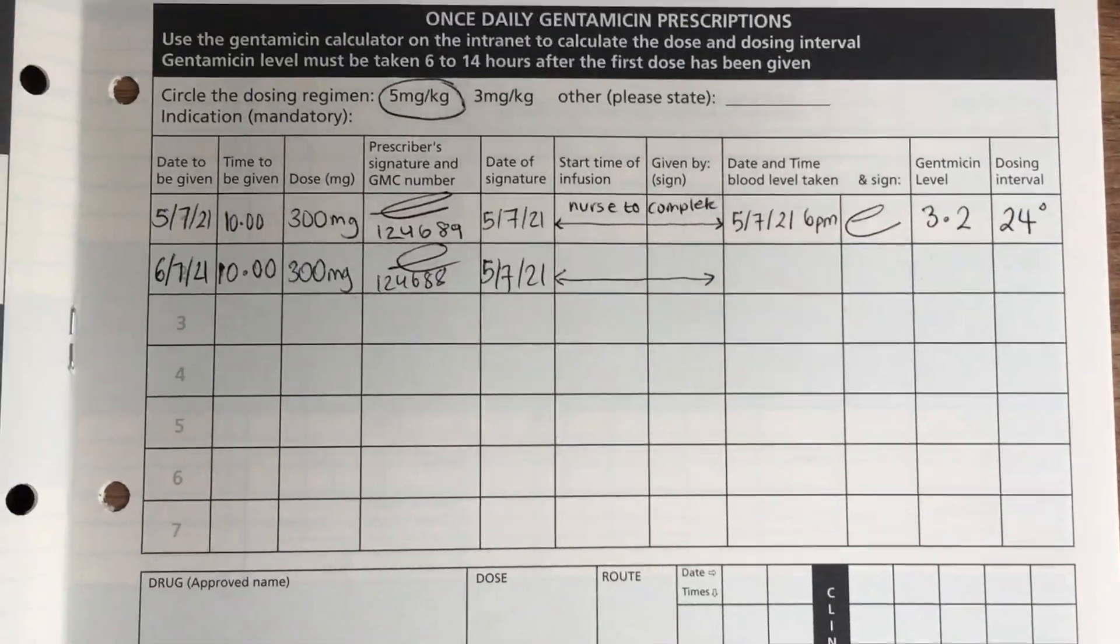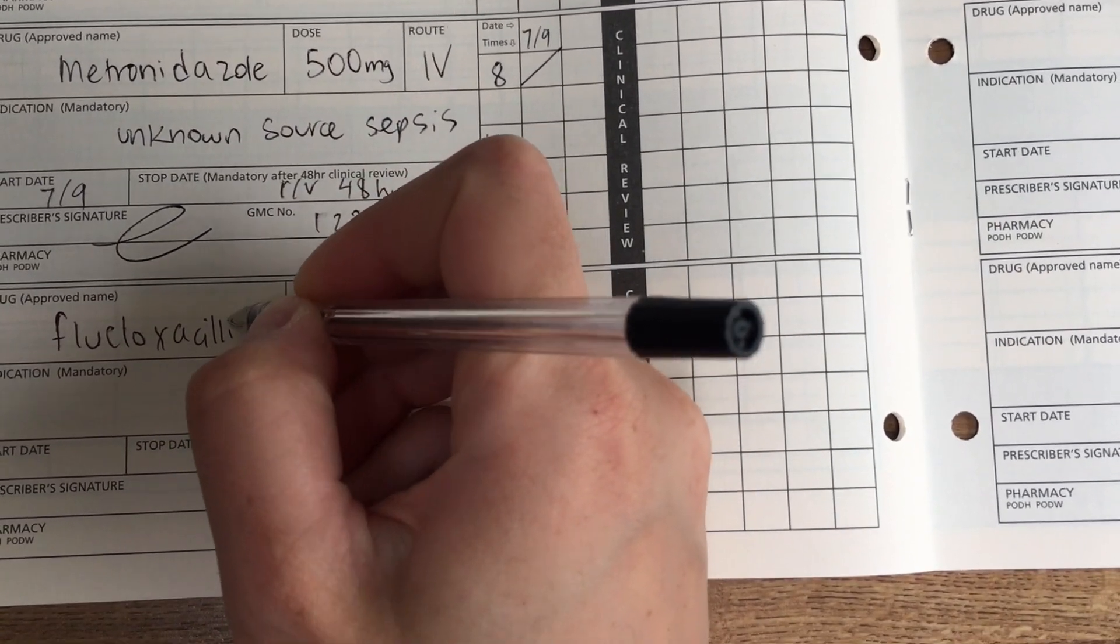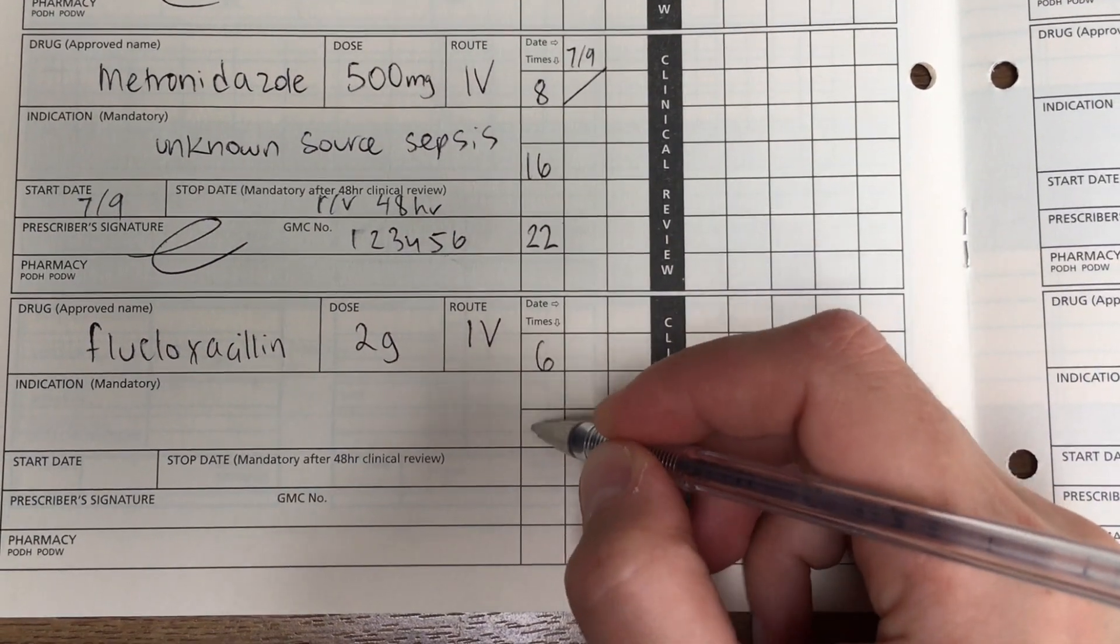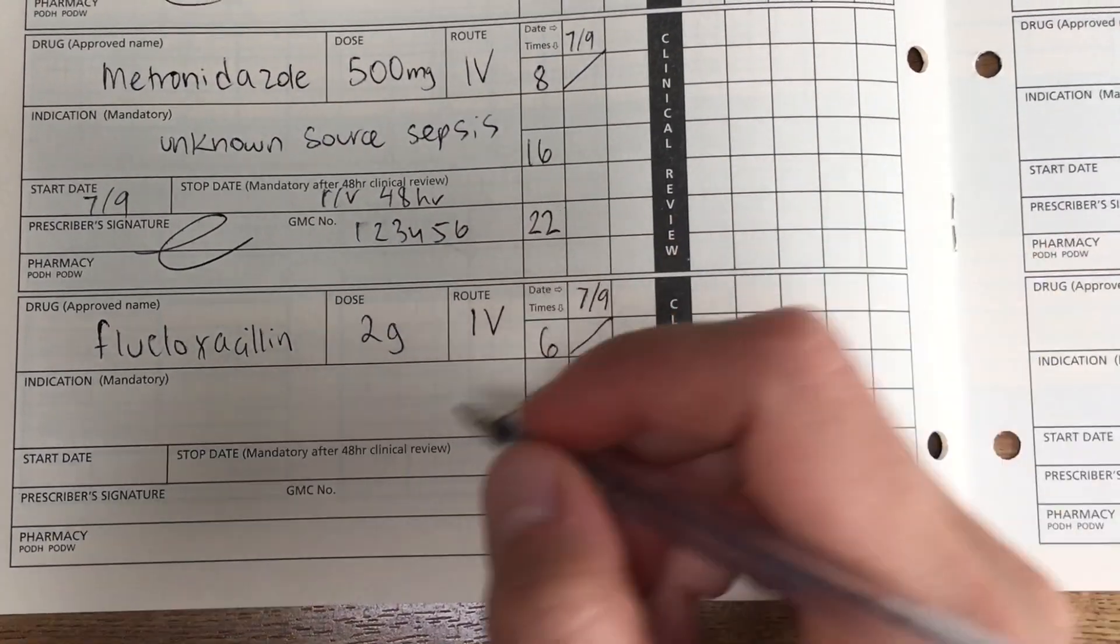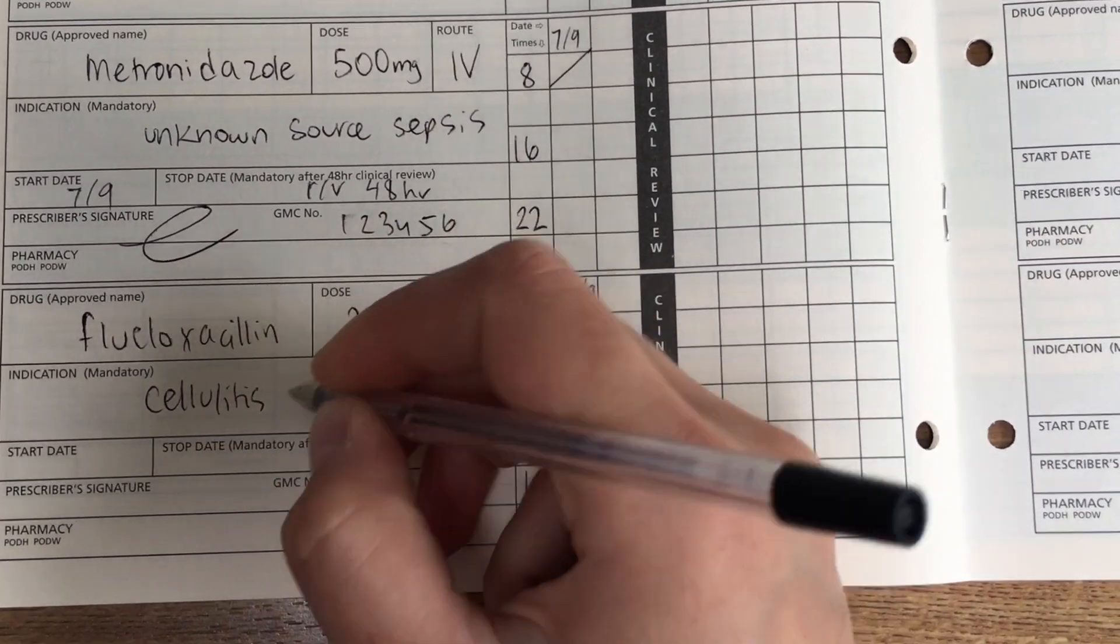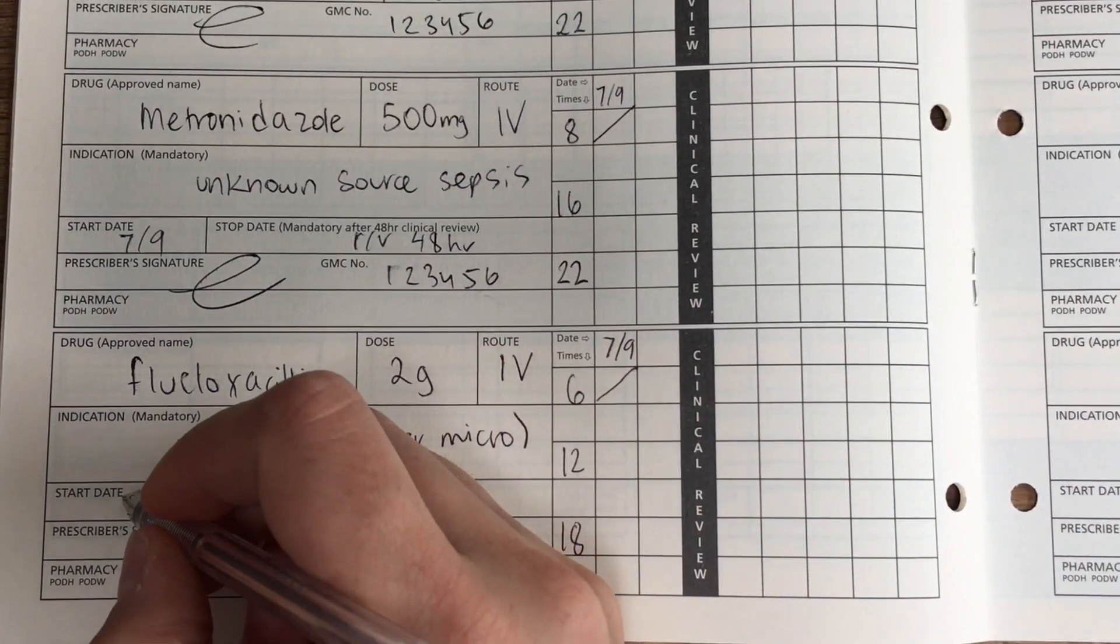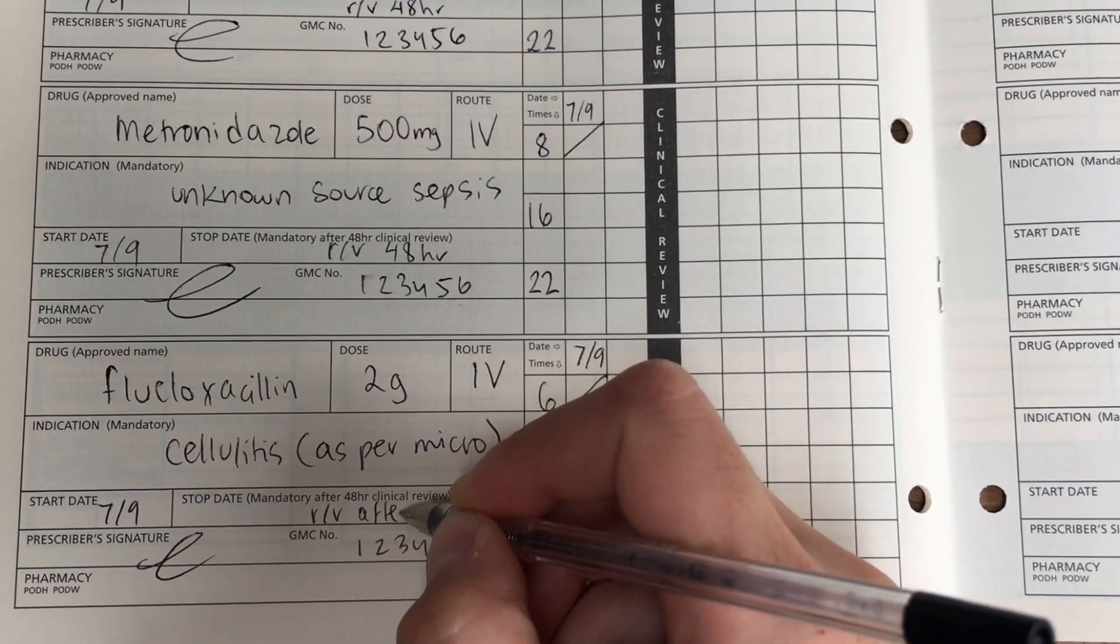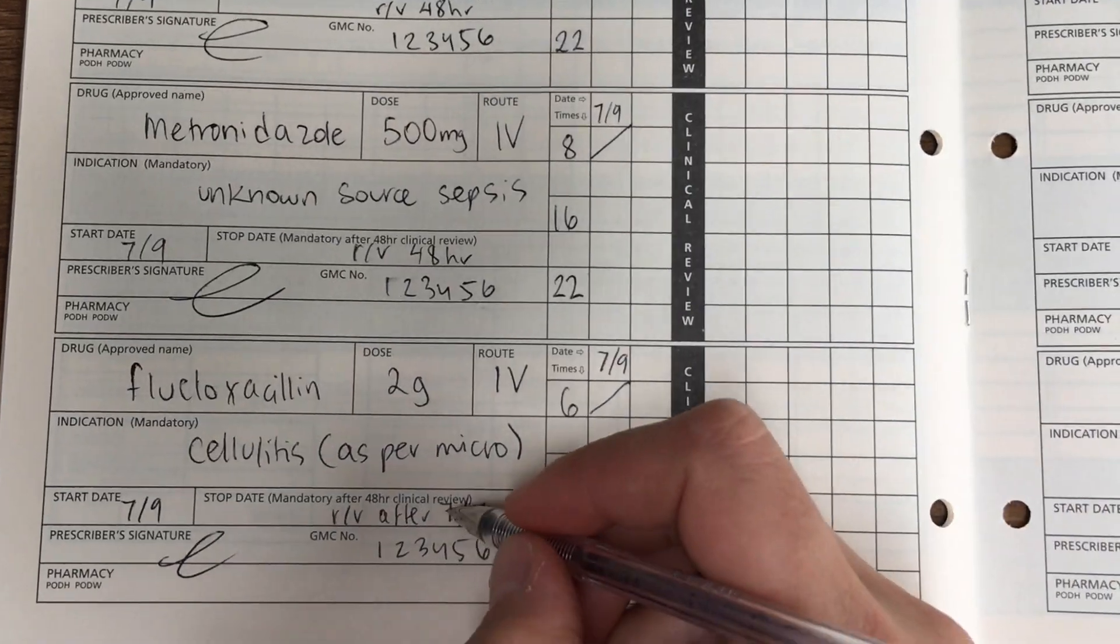The next one is maybe not as common, but flucloxacillin for cellulitis. And I'm putting a strong dose for severe cellulitis here, and it's two grams IV. You give it four times a day, so QDS. I'm just splitting the doses there. I've crossed off the first one, as if the patient is going to start from midday, and I'm putting the indication, so cellulitis. You might see things like as per micro documented in the drug chart, and that just means that there's been advice directly from the microbiologist to give a certain antibiotic, and it's really helpful to have that on the drug chart so that you know that if there's a weird dose or a weird antibiotic, it's for a reason. So, here I've put review antibiotics after seven days.